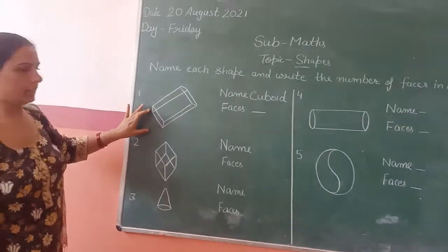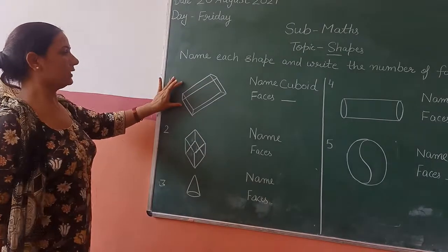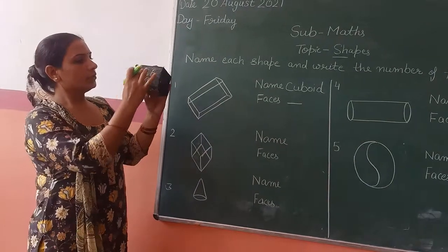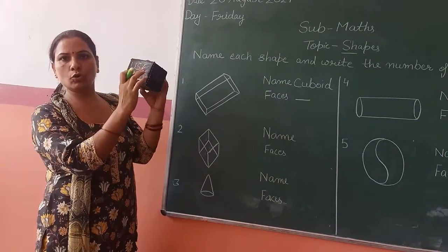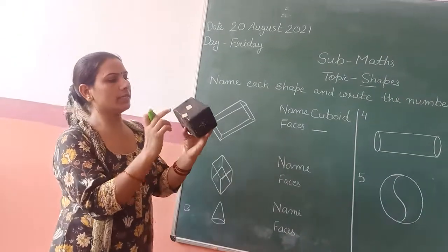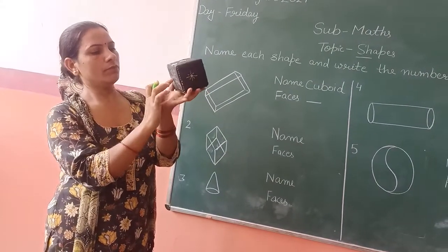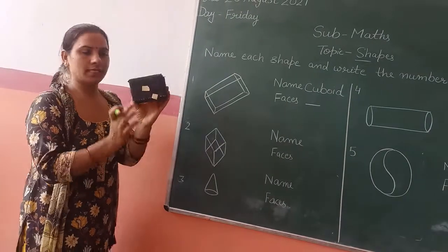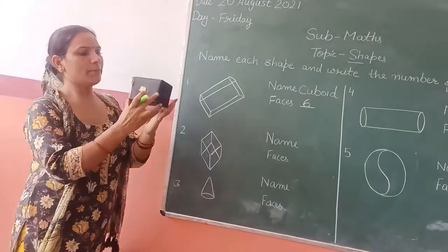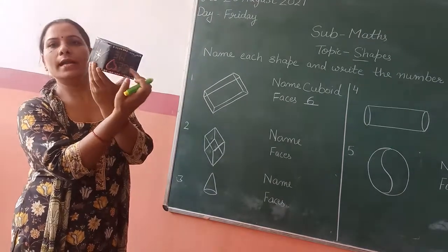Aab hum face count karnye hai. Ye jo cuboid hai, this is cuboid hodha hai. This is cuboid. The face count is 6. 1, 2, 3, 4, 5, and 6.